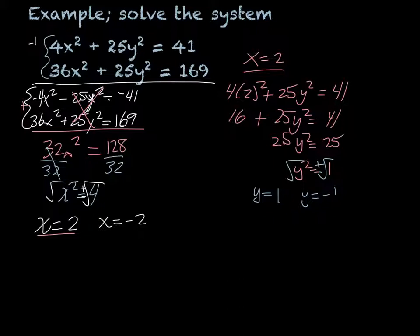All this means is that when x is 2, there could be two possibilities. 2 positive 1, or 2 negative 1. And the last part, now we have to put in x is negative 2.